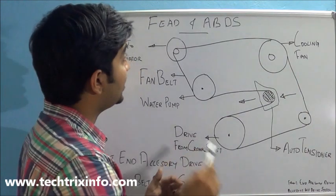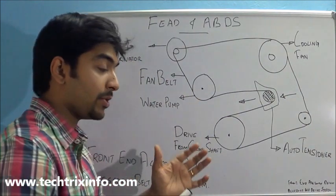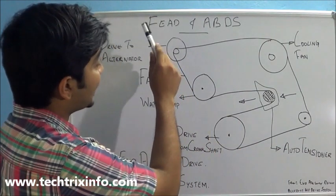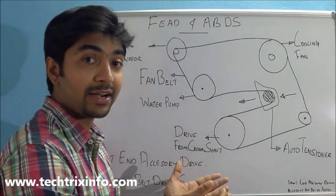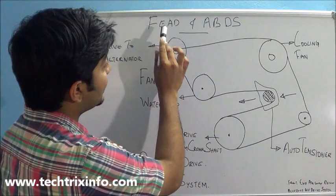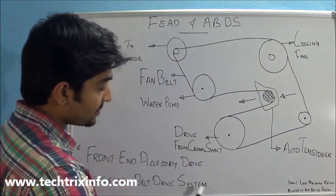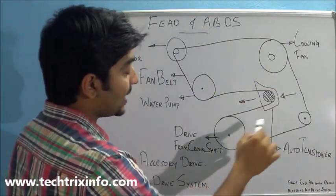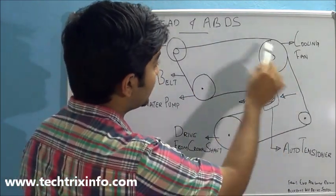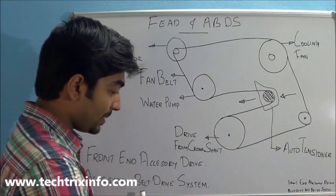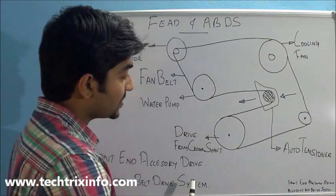So that's called the Front End Accessory Drive because on the front side of the engine we have the accessories and the accessories are getting their drive at the front end. That's why it's called Front End Accessory Drive or Accessory Belt Drive System. The accessories get their drive through the belt. That's why it's also called Accessory Belt Drive System.